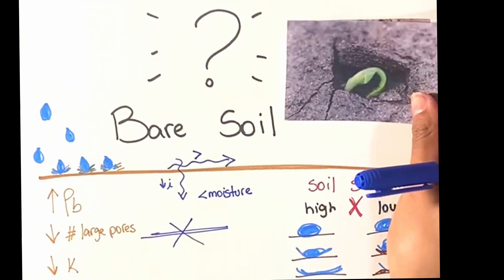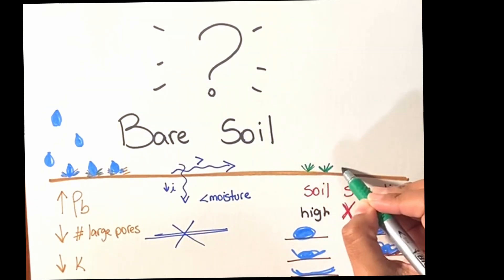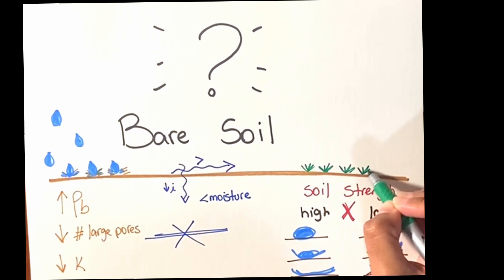So, how do we prevent soil crusting? Well, one of the alternatives is protecting the soil from the impact of raindrops by keeping it covered, using a cover crop, for example.